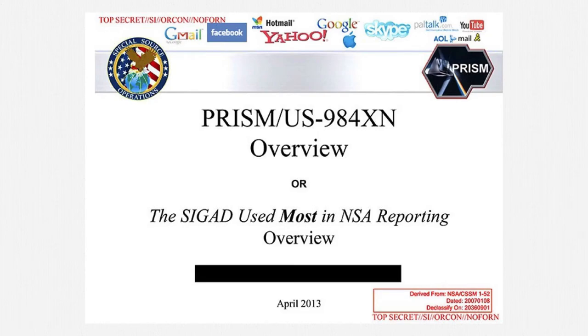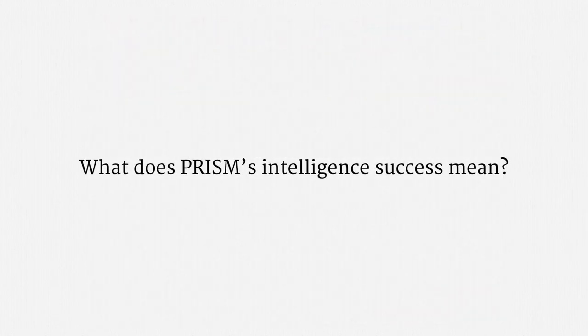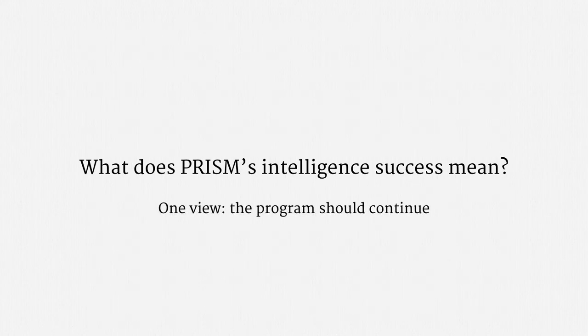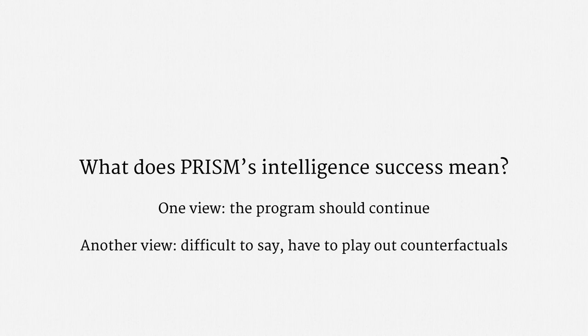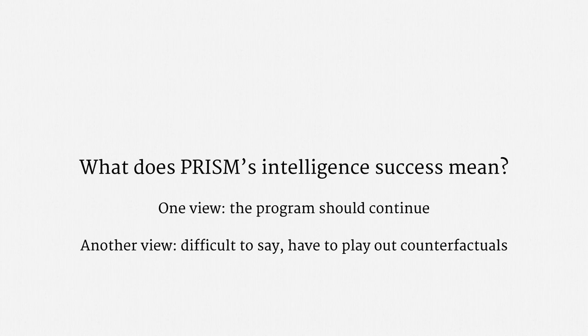The first thought I'd like to leave you with is: what does PRISM's intelligence success mean? There are, very roughly, two perspectives. One view is that the program should continue — it's working, and that's clearly the perspective the executive branch maintains. Another view is that it's difficult to say what PRISM's success means, because that requires playing out some very tricky counterfactuals. For instance, what intelligence would PRISM have developed if NSA analysts had needed to obtain something like a warrant, or perhaps something lesser like a D-order? Only the NSA's internal records could answer those questions, and unsurprisingly the agency hasn't been very forthcoming.